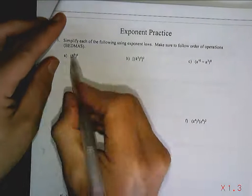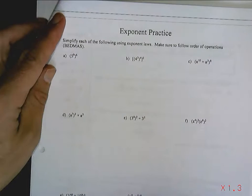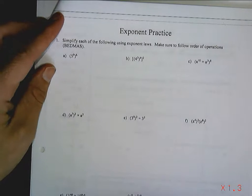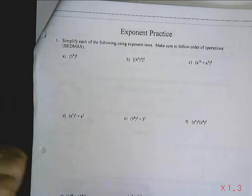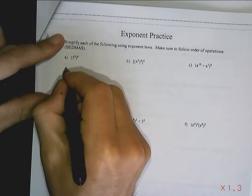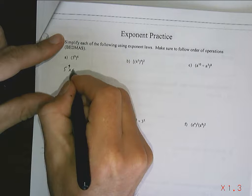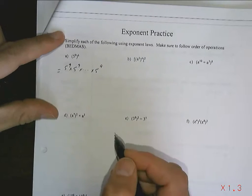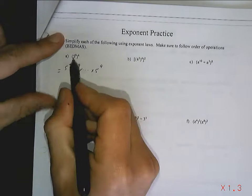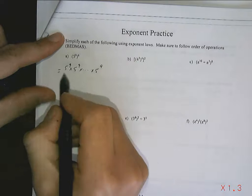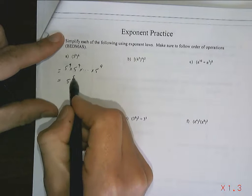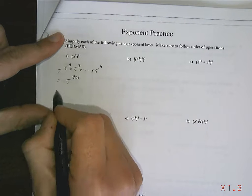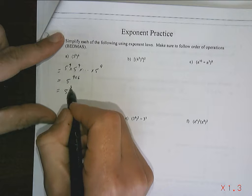So, 5 to the 9 to the 6. This is going to be a matter of doing it in the order that you want to do it. But I know that this means 5 to the 9 times 5 to the 9 so that there are 6 of them. I'm not a big proponent of memorizing a rule. That's what I know that means. So, that means it's going to be 5 to the 9 times 6. There's going to be 6 groups of 9 here. So, it's 5 to the 54.